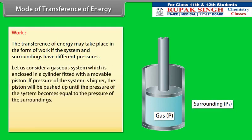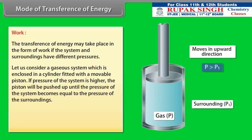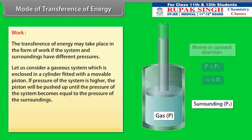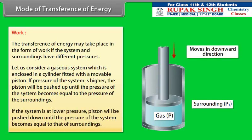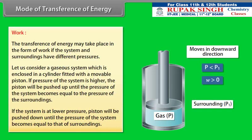The transference of energy may take place in the form of work if the system and surroundings have different pressures. Consider a gaseous system enclosed in a cylinder fitted with a movable piston. If the pressure of the system is higher, the piston will be pushed up until the pressure of the system becomes equal to the pressure of the surroundings. If the system is at lower pressure, the piston will be pushed down until pressures equalize.